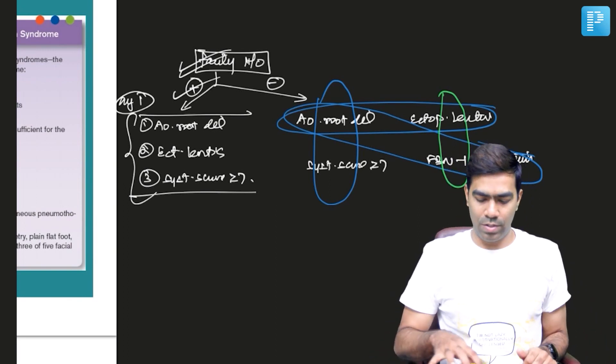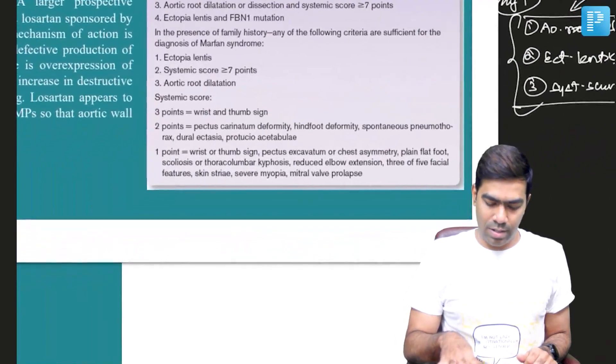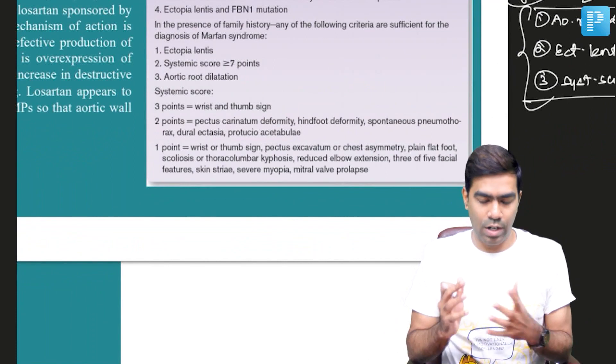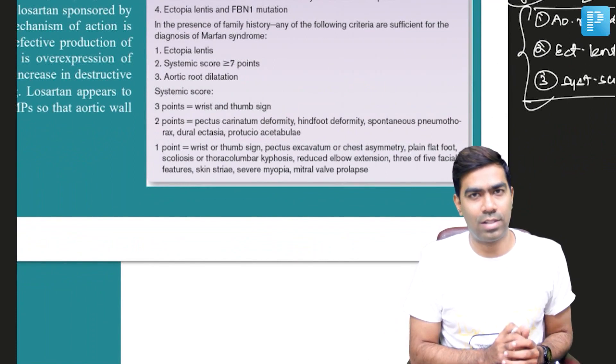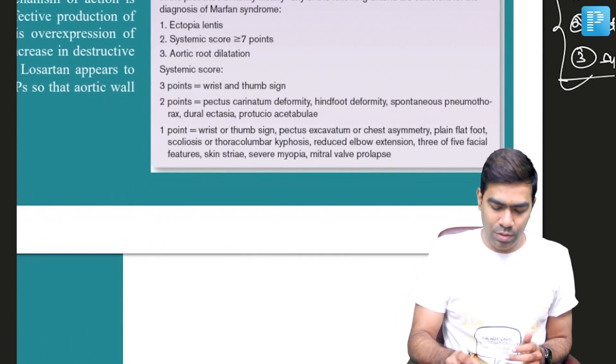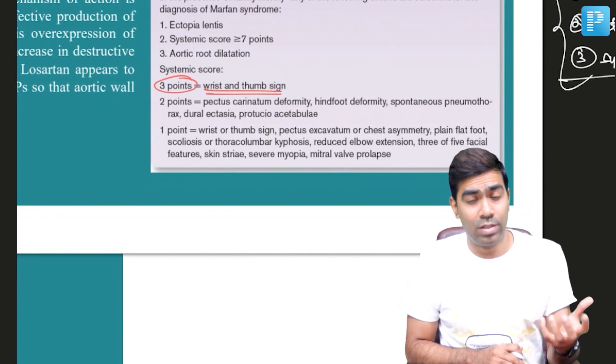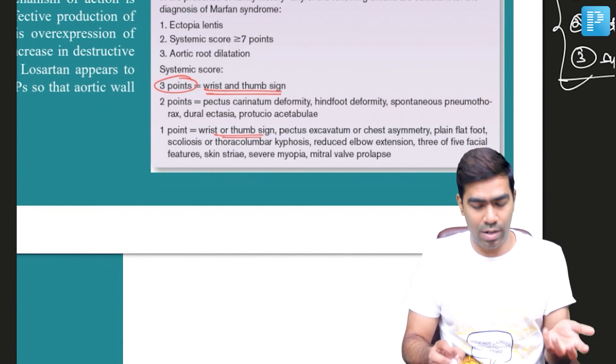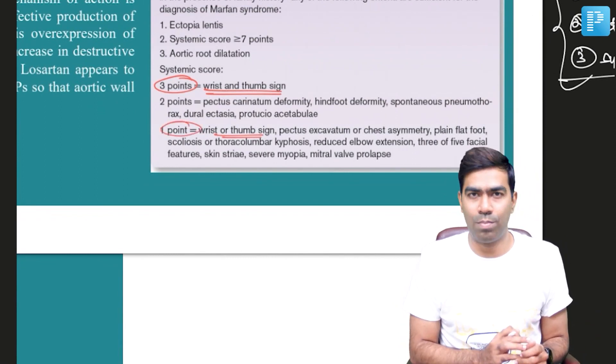For systemic features scoring: you give three points if the patient exhibits both thumb and wrist signs, but only one point for either thumb or wrist sign alone.